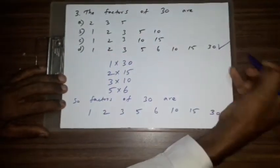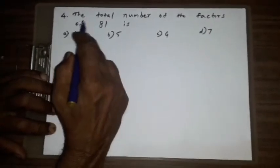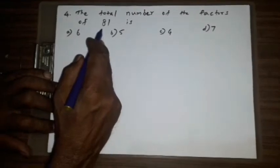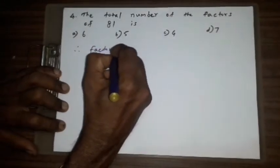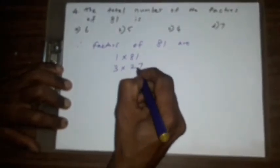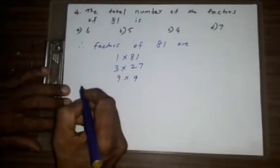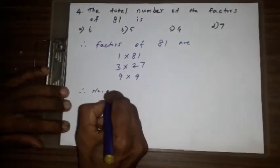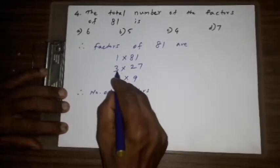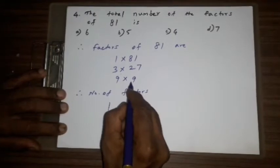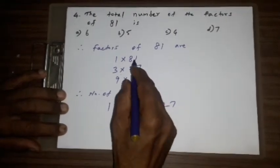Question number four: the total number of factors of 81 is A) 6, B) 5, C) 4, D) 7. Therefore, factors of 81 are 1 x 81, 3 x 27, 9 x 9. Therefore, number of factors: 1, 3, 9, 27, 81.